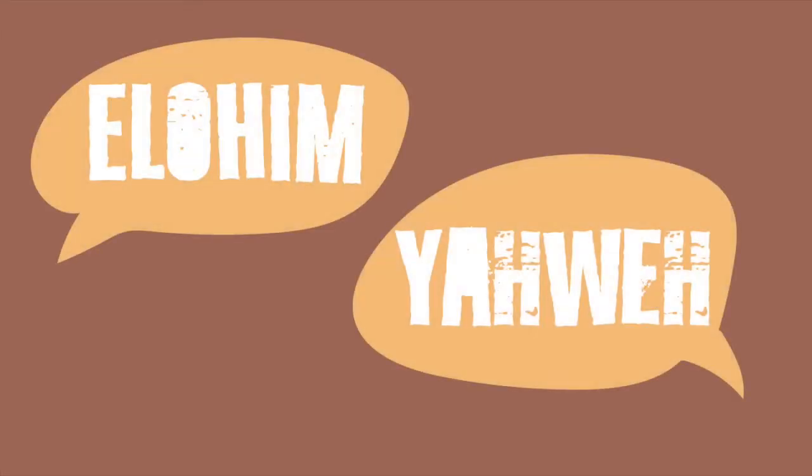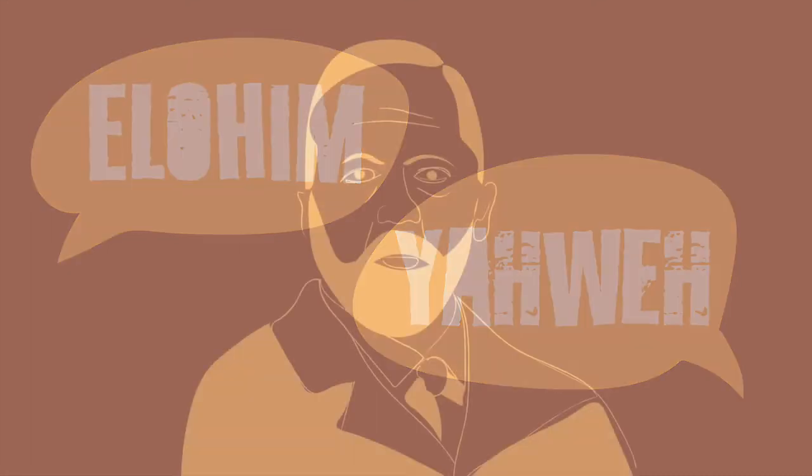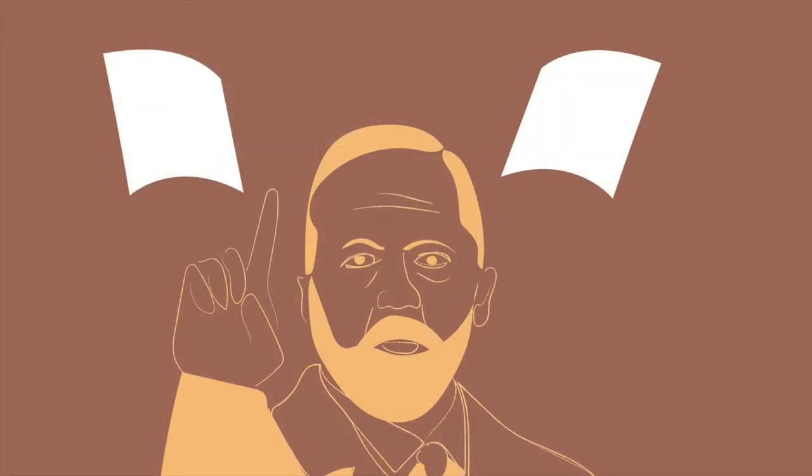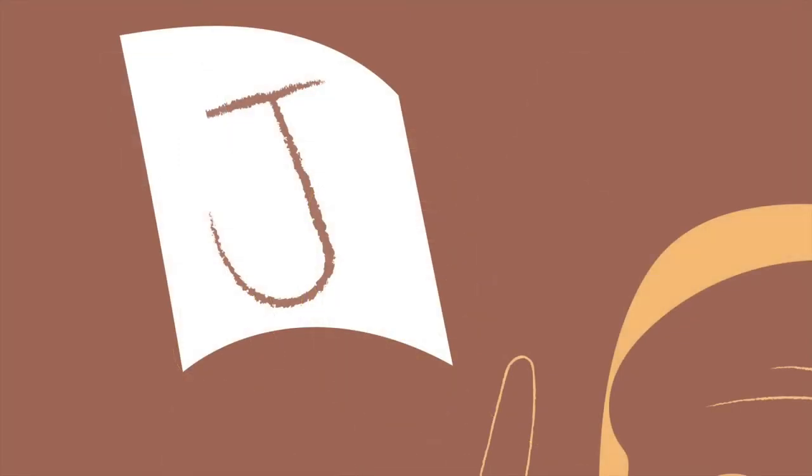Added to these apparent discrepancies, the use of the divine name alternates back and forth. God is referred to as Elohim sometimes and Yahweh at other times. All of these oddities led scholars, most famously Julius Wellhausen, to hypothesize the potential isolation of different sources in the flood account. One source they named J, which is an abbreviation of the German spelling for Yahweh, and the other they named P, which is an abbreviation for a priestly source.